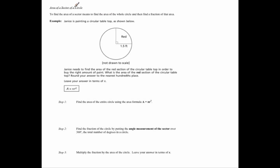We're trying to find the area of a sector of a circle. To find the area of a sector means to find the area of the whole circle and then find a fraction of that area. A sector is the area between two radii and the arc that connects their points. This would be a sector, a red sector, and this would be another sector.